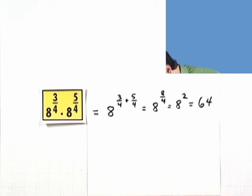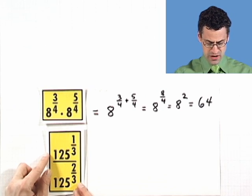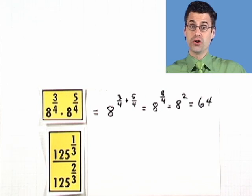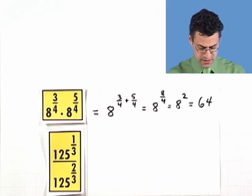Let's try another one. 125^(1/3) divided by 125^(2/3). What do we do here?